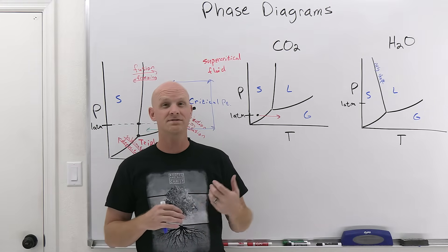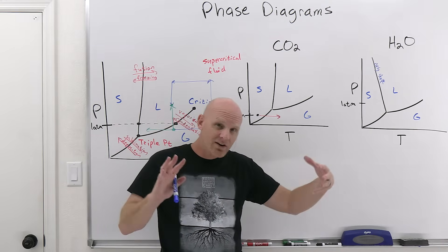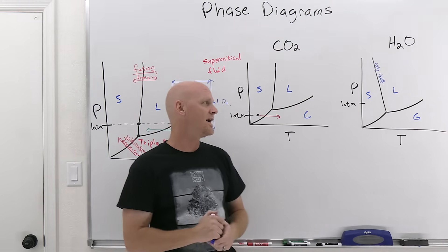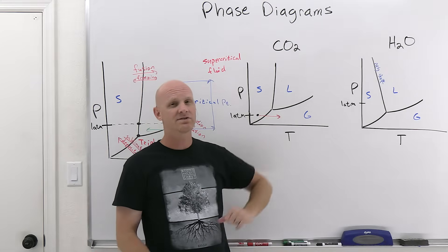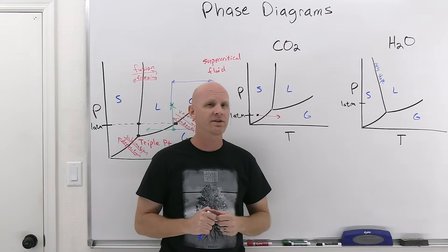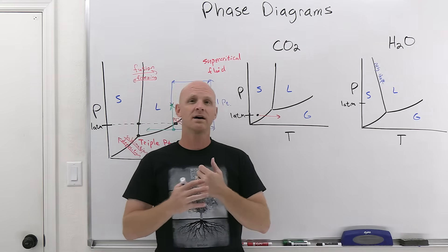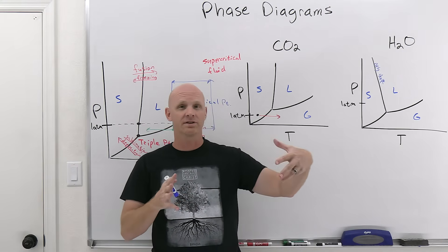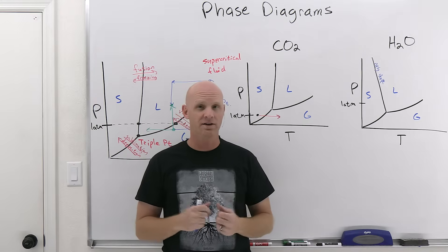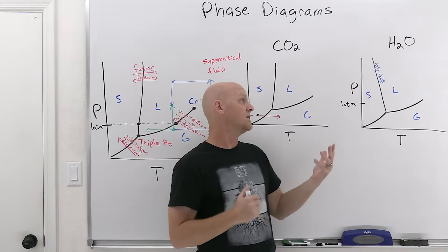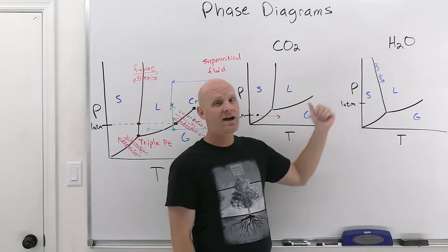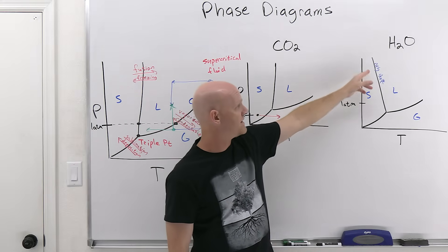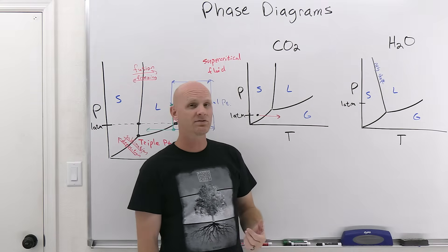Without that negative slope, you probably wouldn't be alive today. It turns out it's a function of the fact that when water freezes to ice, it actually expands — that's unusual. For most substances, when they freeze they get more dense. But for water, due to hydrogen bonding, ice forms a crystal lattice and expands slightly to maximize hydrogen bonding. As a result, ice is actually less dense than liquid water, and that causes the negative slope.